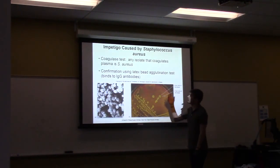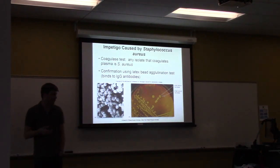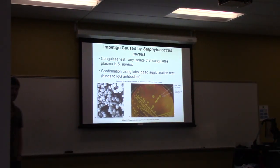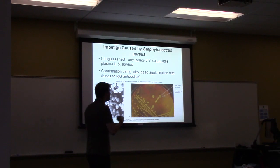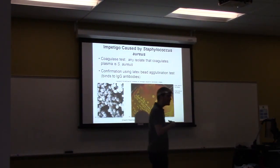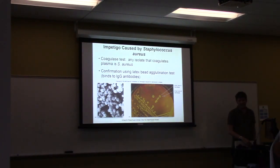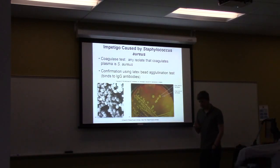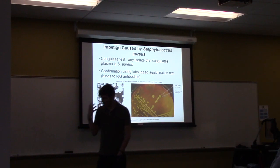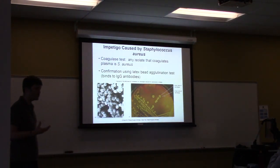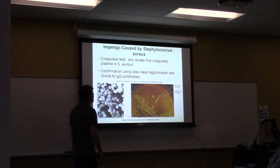A bit more about S. aureus — you'll see it in pretty much every chapter because it's a super-pathogen that can infect almost any part of the body due to its many virulence factors. Importantly, S. aureus is a commensal in about 60% of us, found primarily in the upper respiratory tract — mainly the nose — where it has few virulence factors and doesn't cause much harm. However, if it picks up virulence factors, it can cause disease.